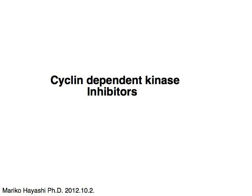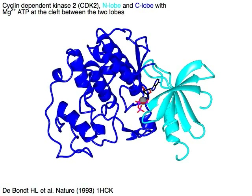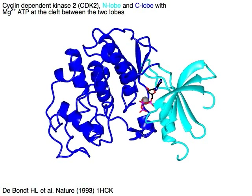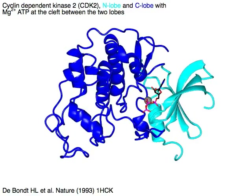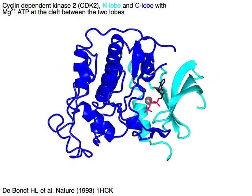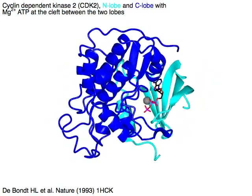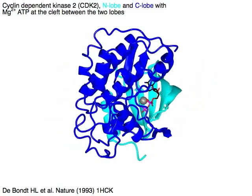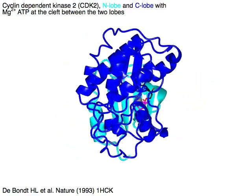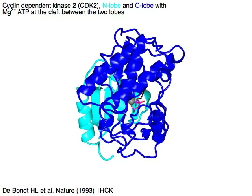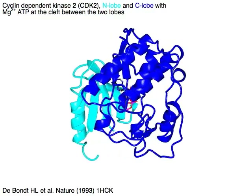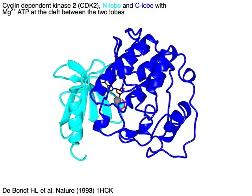Cyclin-dependent kinase and its inhibitors. Cyclin-dependent kinase 2, or CDK2, has an N-lobe in cyan and C-lobe in blue, and a magnesium ATP at the cleft between the two lobes.